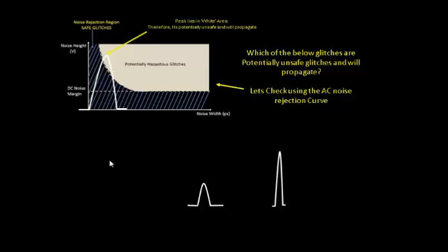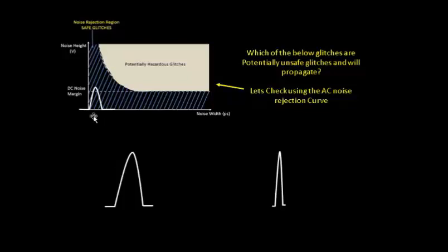That makes it a potentially hazardous glitch. Next, we'll take this glitch, and if you see, the glitch height obviously crosses the DC noise margin, so it comes into the category of glitch.